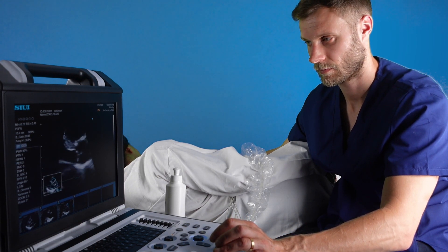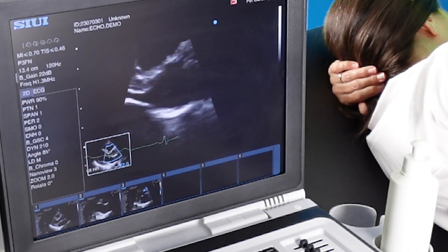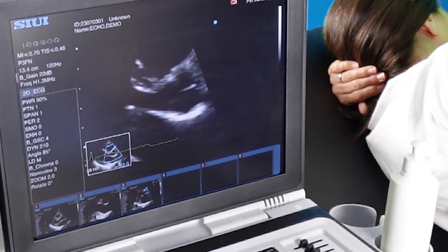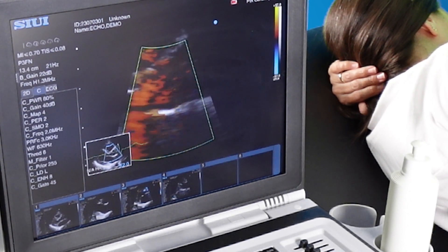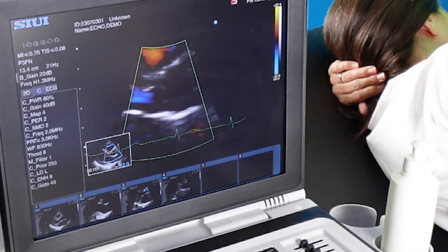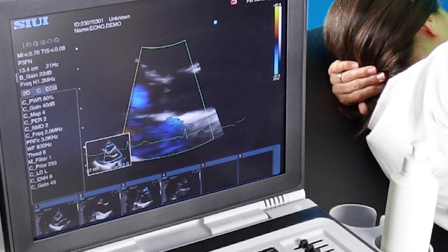Zoom in over the aortic valve now and again check that the valve leaflets are opening well. Put color Doppler over the valve to check for any signs of turbulence or regurgitation.